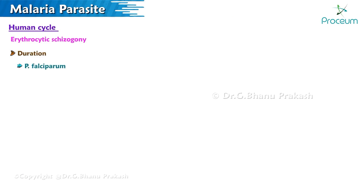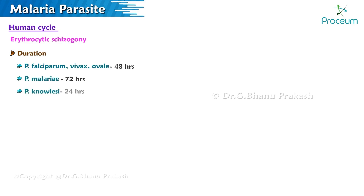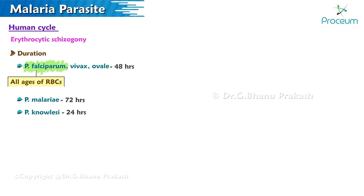Duration of the erythrocytic cycle: in Plasmodium falciparum, vivax, and ovale, it is 48 hours; in Plasmodium malariae, it is 72 hours; in Plasmodium knowlesi, it is 24 hours. Plasmodium falciparum and knowlesi infect red blood cells of all ages.